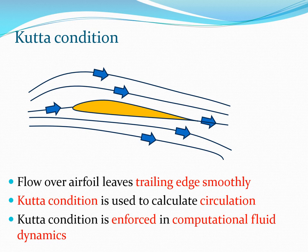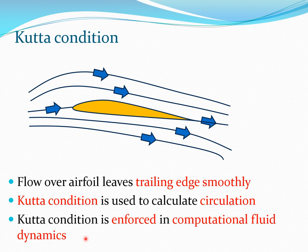Now let us turn to the Kutta condition. The Kutta condition states that the flow over an airfoil leaves the trailing edge smoothly. When we draw streamlines passing over the top and bottom of an airfoil, they always leave the trailing edge smoothly — this is not just a convention but a physical fact. The Kutta condition is used to calculate the amount of circulation in the system, and in CFD it is enforced as a mathematical condition to obtain the correct circulation and thus calculate lift properly.